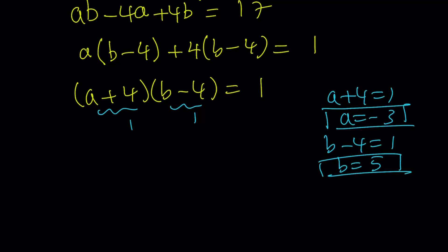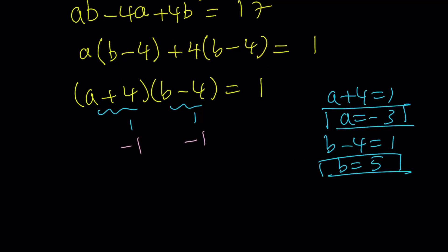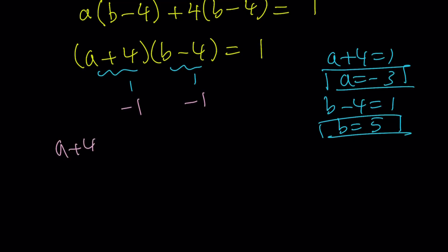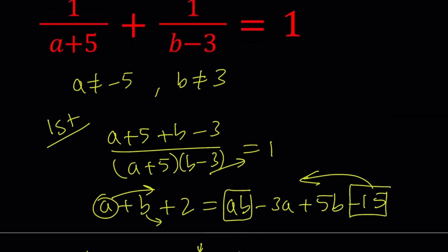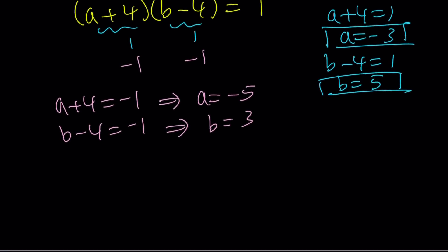How about the second case scenario? The second case scenario is basically you have the negative 1 and the negative 1. If a plus 4 is equal to negative 1, this means a is equal to negative 5. And if b minus 4 is equal to negative 1, that means b is equal to 3. But pay attention to this. a cannot be negative 5, b cannot be positive 3. Therefore, this is not possible. So that leaves us with one ordered pair for the solution. a comma b can only be negative 3 comma 5. And they're not interchangeable.